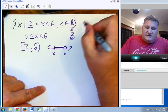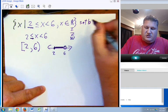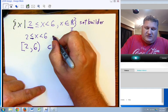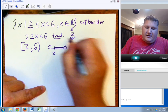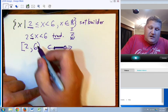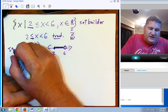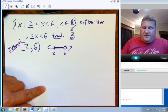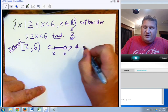So, set builder notation, traditional notation, we'll go ahead and call that for our purposes, and interval notation is what we go with there. And of course, the old traditional number line.